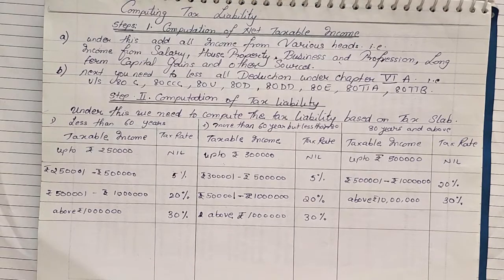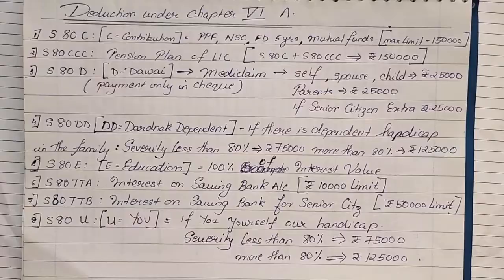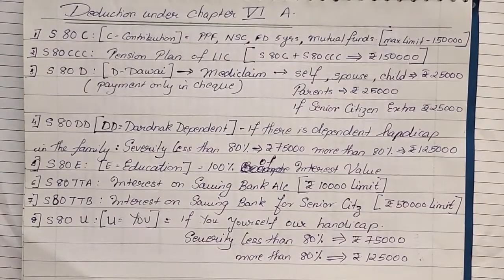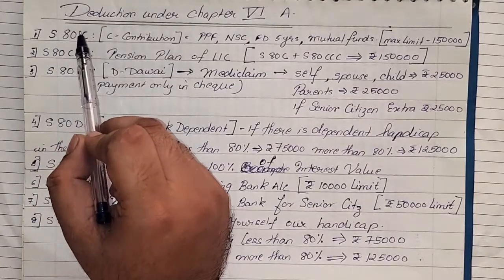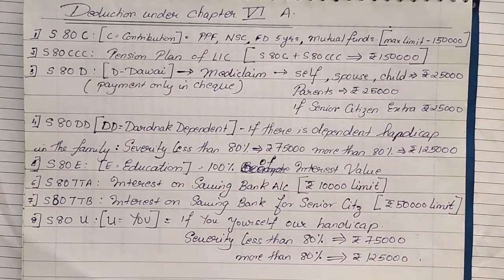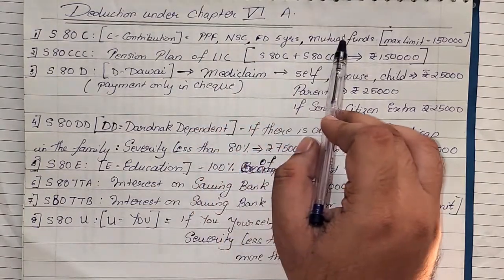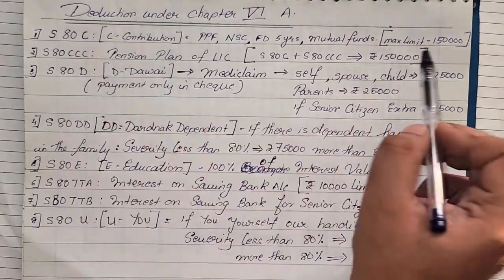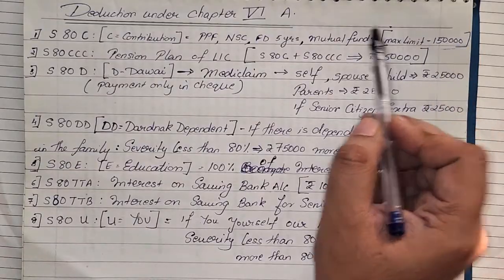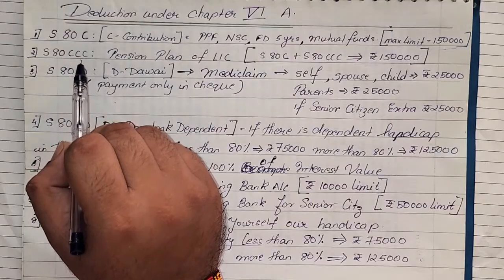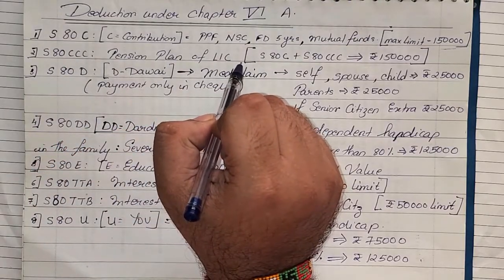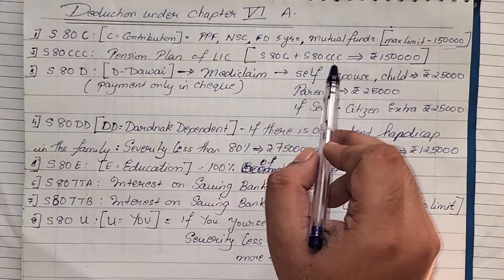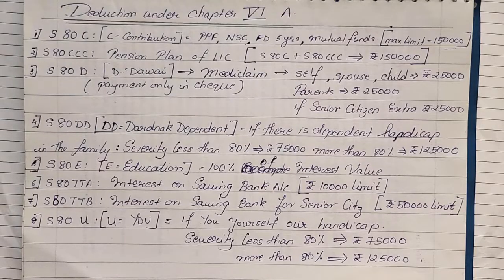Now let us see how to remember the various sections under Chapter 6A. Section 80C — 'C' stands for contribution, meaning you are making a payment towards some investment or buying something. This includes provident fund, NSC, FD for five years, mutual fund, etc. The maximum limit of 80C is 1 lakh 50,000. Section 80CCC covers only the pension plan of LIC. Together, 80C and 80CCC cannot exceed 1 lakh 50,000.